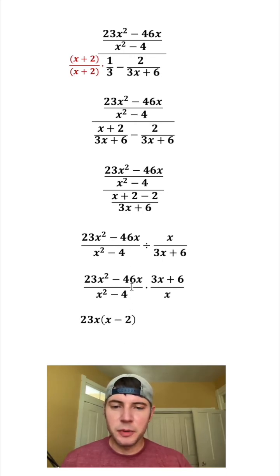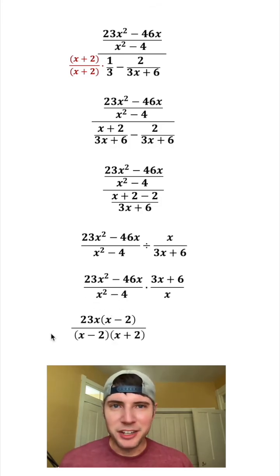Now let's look at the bottom. x squared minus 4, that is a difference of two squares, so that's going to be x minus 2 times x plus 2. So now let's do this fraction 3x plus 6. We can factor 3 out and then we'll bring the x down here.